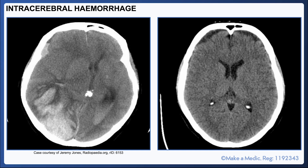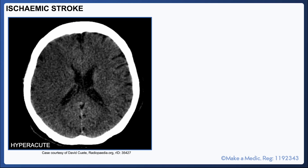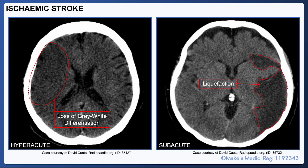In an intracerebral hemorrhage, you can see an area of extravasated hyperdense blood within the brain parenchyma itself. The appearance of a stroke on a CT head scan varies considerably depending on the time since onset. CT head scans are initially done in the acute setting to exclude an intracranial bleed. An early sign in ischemic stroke is loss of gray-white differentiation, and after a few days the infarcted area will liquefy and appear hypodense.